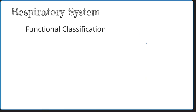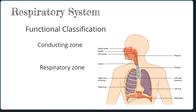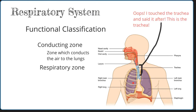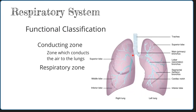Functionally, the respiratory system is split into the conducting zone and the respiratory zone. The conducting zone is much larger, as it is the zone which conducts the air to the lungs. This is going to include the nose, the pharynx, the larynx, the trachea, and then further inside, the bronchi, the bronchioles, and the terminal bronchioles. As you can see, in this classification, that is the majority of the respiratory system.